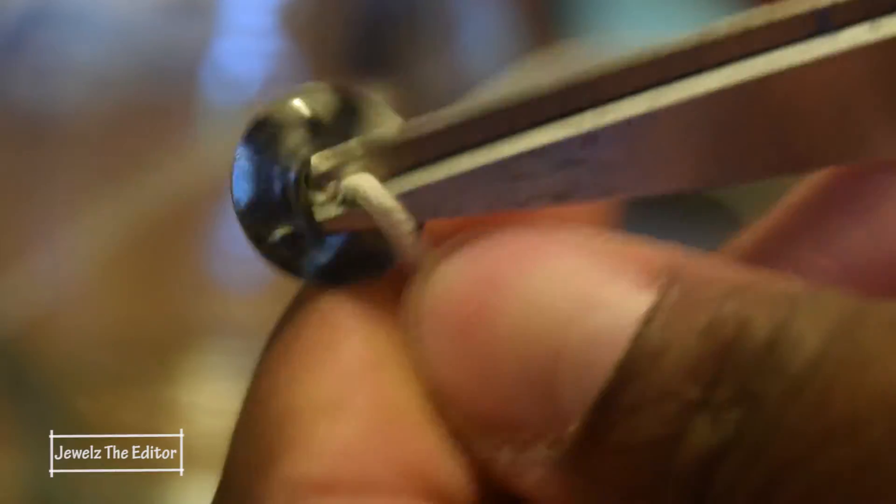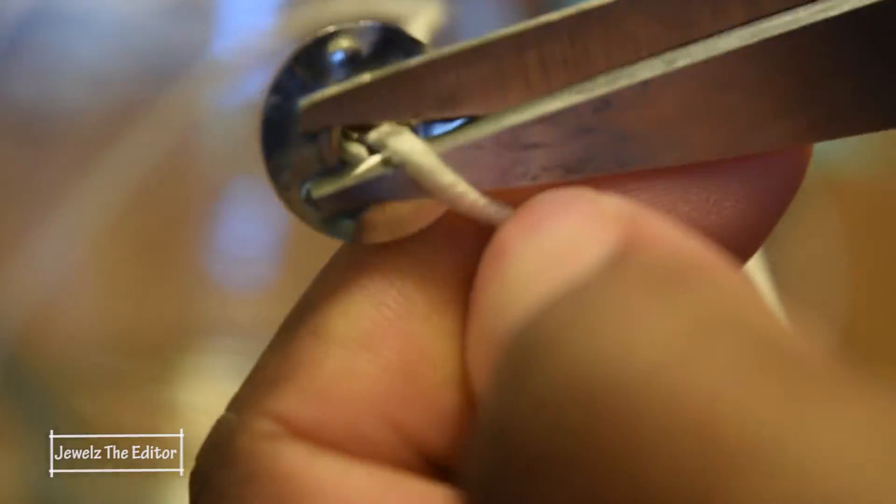Step one, boil water in pot number one. Place wax in pot number two, then place pot number two inside pot number one.